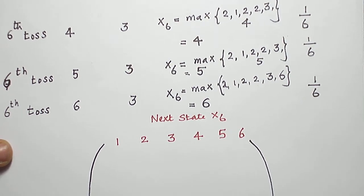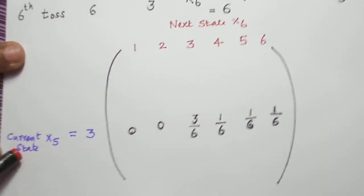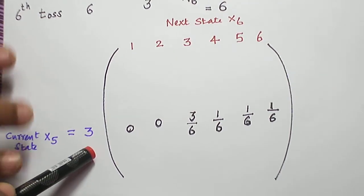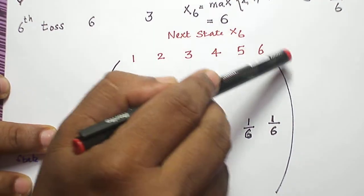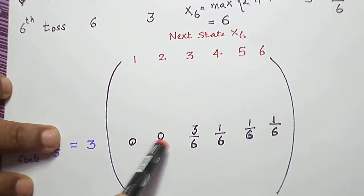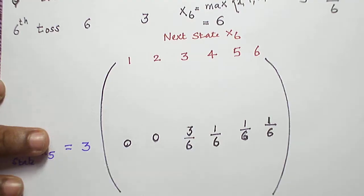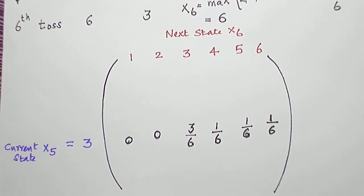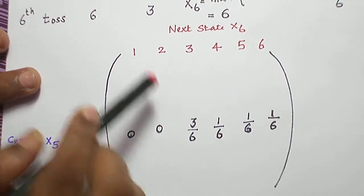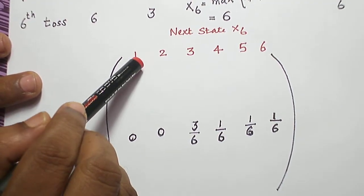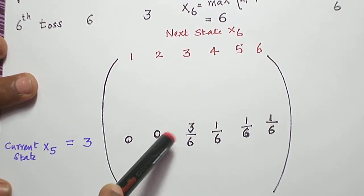So I explained this row. Suppose current state is 3. Next possible states are 1, 2, 3, 4, 5, 6. Now, lower numbers cannot appear. Since we are choosing the maximum, lower numbers cannot appear. So it cannot move from state 3 to state 1 or 2.